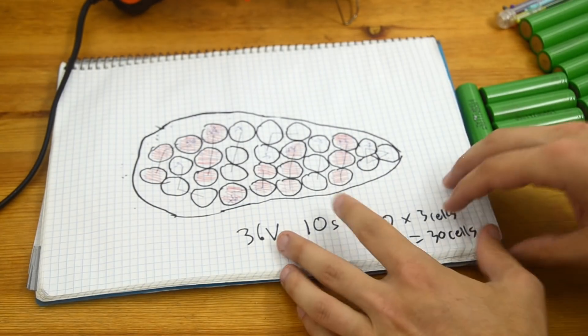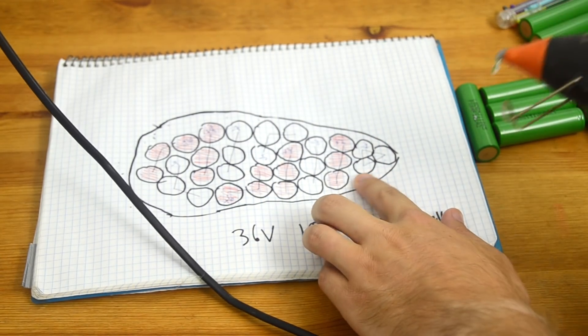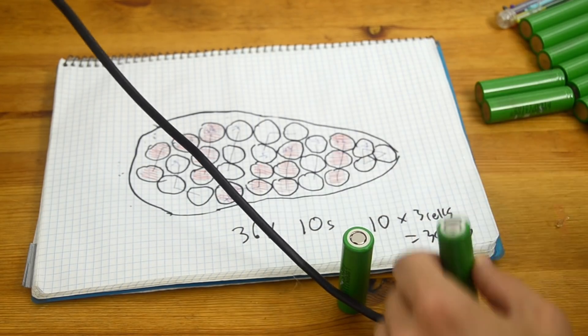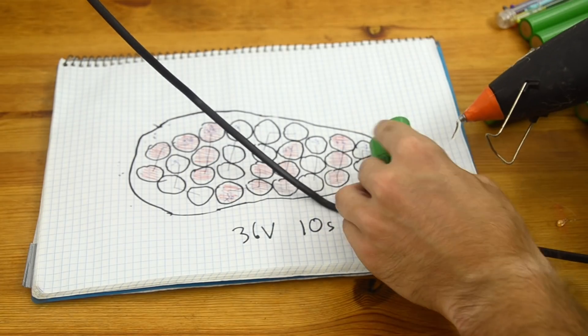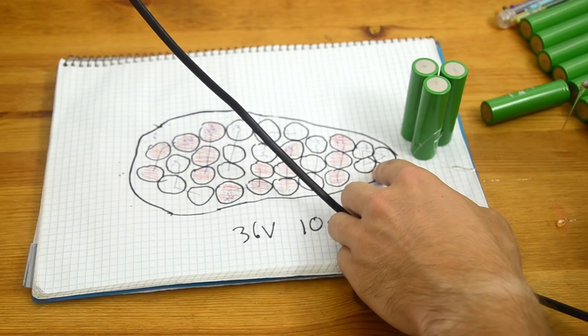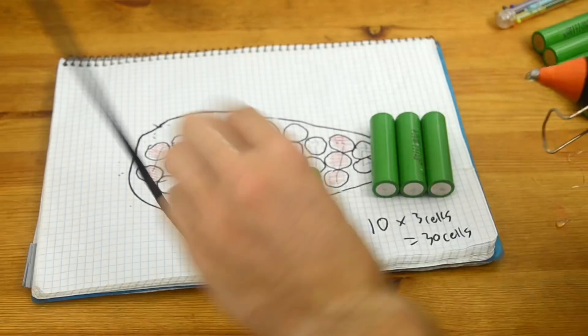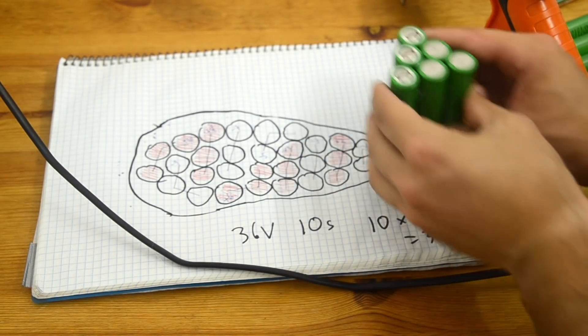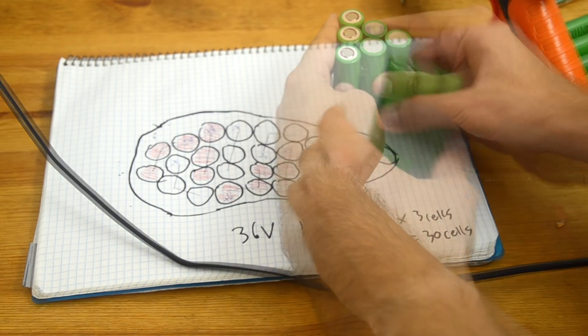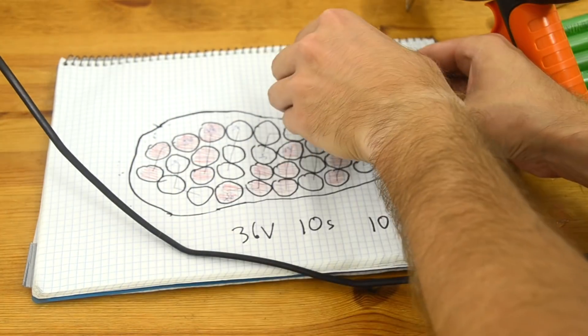All right. So now let's get started putting the first part of our battery together. I'm just going to do these first two cell groups here. I'm going to start by hot gluing just the first group. All right. So there we've got our minus one group and now we're going to put three more cells on there. All right. And now we've got our first three rows here of cells. Let's do one more row.